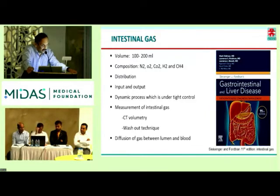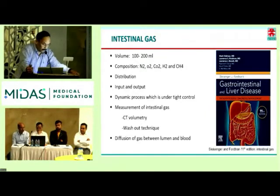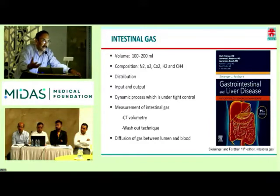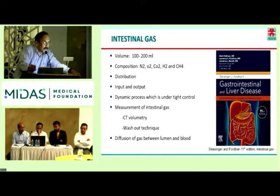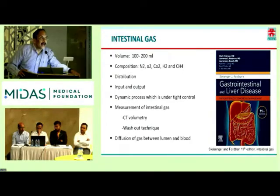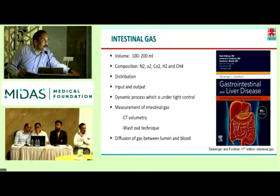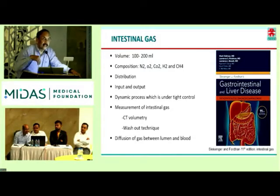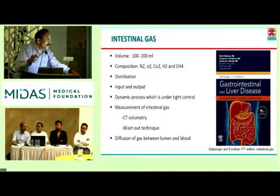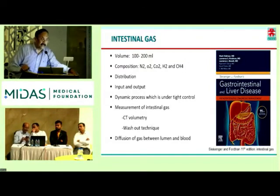The distribution of gas occurs amongst the GI tract. The input of gas occurs predominantly once you eat something — that's a major input. Apart from that, carbonated beverages cause input. Gas is also liberated by organisms and metabolism. So these are four sources of gas. The output occurs through eruptions which bring out the gas, and flatulence. Organisms also consume gas. So there is a dynamic process under tight control, with intake and output being controlled.